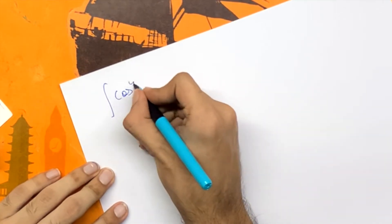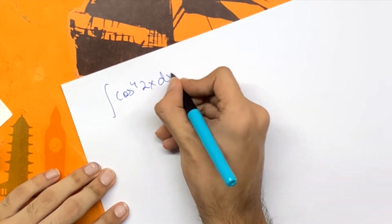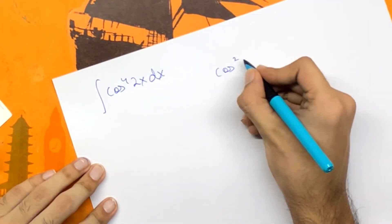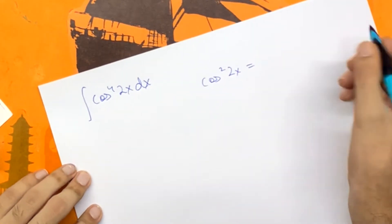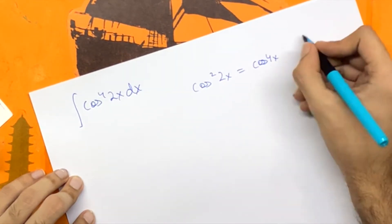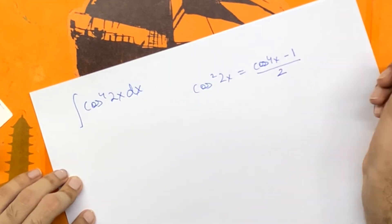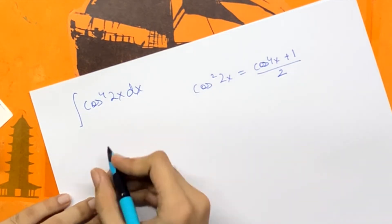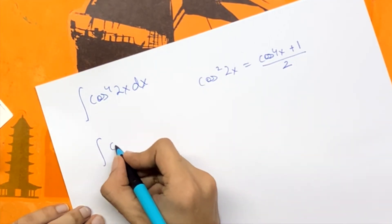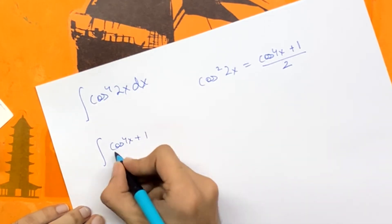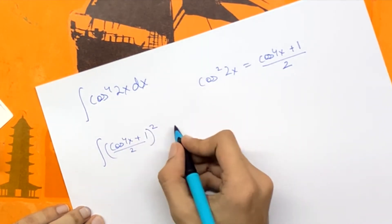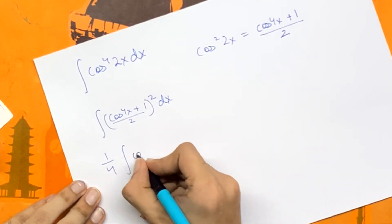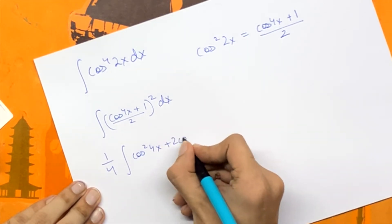Now we have the third integral, which is the integral of cos to the power 4 of 2x dx. We can write cos square 2x as cos 4x plus 1 upon 2. So we have the integral of cos 4x plus 1 upon 2, whole square, dx. Opening the square, we have 1 by 4 times the integral of cos square 4x plus 2 cos 4x plus 1 dx.